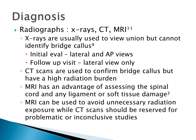For the diagnosis of thoracic spine fractures, imaging of some type is needed. X-rays, CT, and MRI scans are often used. X-rays can diagnose the initial thoracic fracture and can also be used to view union during the healing process. However, X-rays cannot identify bridge callus. CT scans can confirm bridge callus but carry a high radiation burden. Therefore, MRI scans have the advantage of assessing ligamentous or soft tissue damage as well as confirming bridge callus without the high radiation burden.